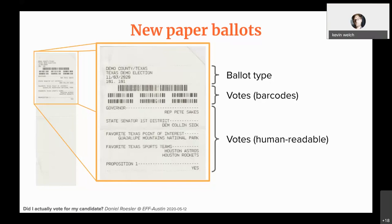The EFF community is ecstatic about the non-digital paper trail backup since computers are easy to hack. As a programmer, Daniel understands why they went with barcodes — trying to read the human-readable portion with optical character recognition would be terrible and very error-prone, causing many misrecorded votes. There should be some middle ground — an encoding a machine can accurately read, but slightly more human-readable than a pure barcode.